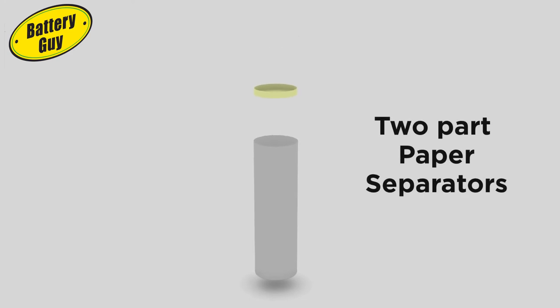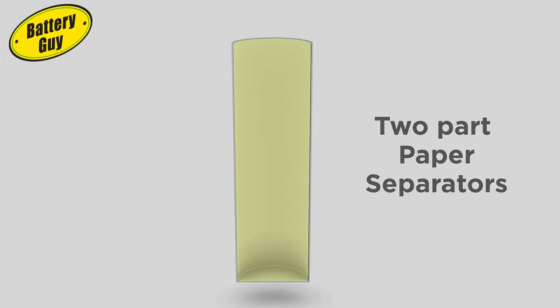A paper disc with a crown is placed at the very bottom of the can. A second flat paper separator rolled into a cylinder is then inserted. These two elements will prevent the positive cathode material, which will be placed inside, from making contact with the negative anode case.